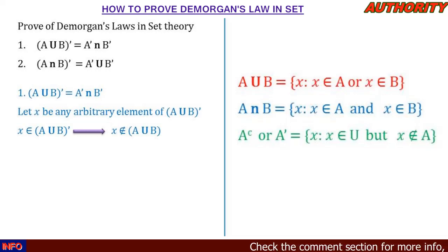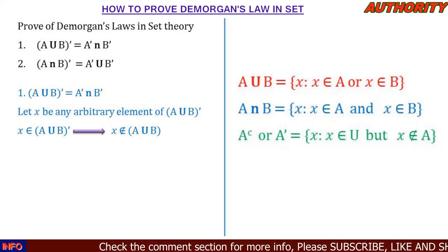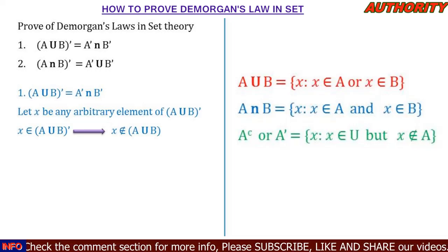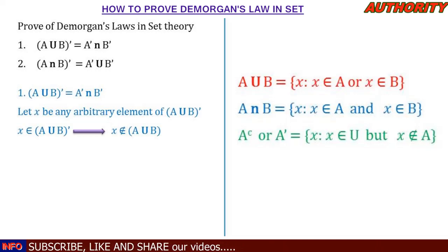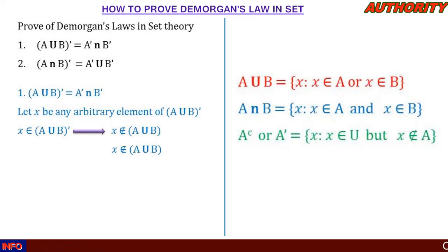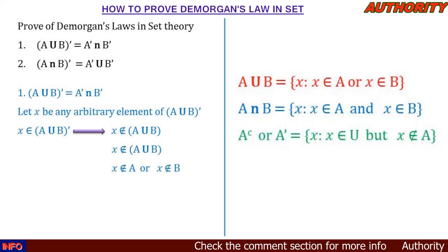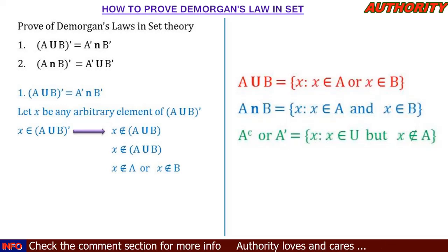We're talking about union — a set defined by 'or' — and complement means the element exists in the universal set but not in the given set. So if x exists in (A union B) complement, that means x is not in A union B. And if x is not in A union B, it implies that x does not exist in A or x does not exist in B, since union talks about elements in A or in B.